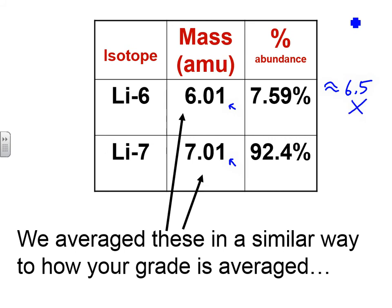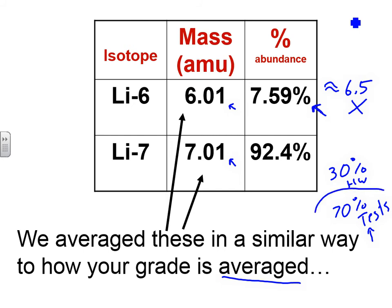The weighted average considers the weight of the percent abundance — similar to how your grade is calculated. For example, 30% of your grade is based on homework and 70% is based on tests. If you do poorly on tests and really well on homework, you'll still get a lower grade because tests weigh more. Same thing here: lithium-7 weighs much more toward the overall mass than lithium-6, so the real mass is going to be somewhere closer to 6.9 because lithium-7 is more abundant.